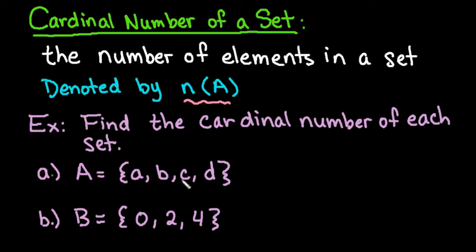if I count them there's 1, 2, 3, 4 elements. So I can say that the cardinal number of a is equal to 4 and it's that easy.